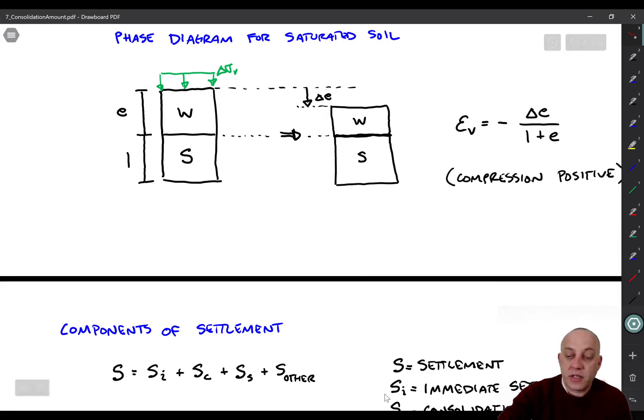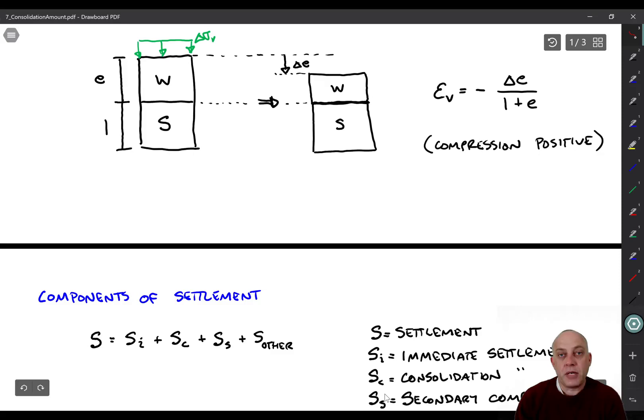So what we have now is an expression we can use to relate change in void ratio to volumetric strain, so epsilon V is volumetric strain, and it's equal to minus delta e over 1 plus e. And you might be wondering, why is there a minus sign there? Well, we're going to enforce a compression positive sign convention, like we always do in soil mechanics. It turns out that if you go from this reference condition to this deformed condition after consolidation, delta e is actually negative, right? We've had a compression, the void ratio has gone from being high to being low, therefore delta e is a negative number, and it's compressive, so we have to multiply by minus 1 in order to get a positive volumetric strain, so that's why that sign, that negative sign appears there.